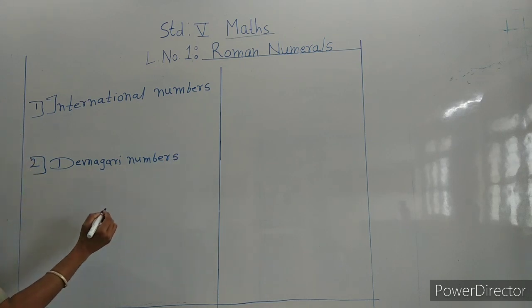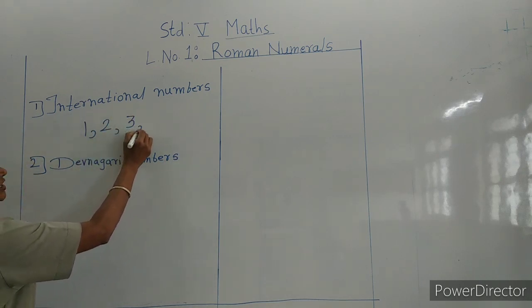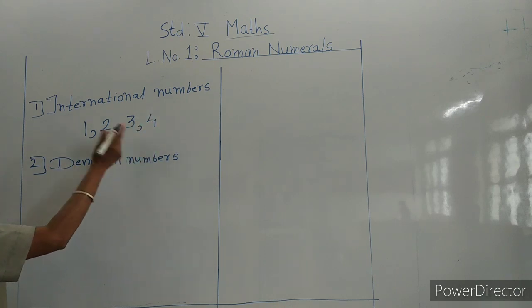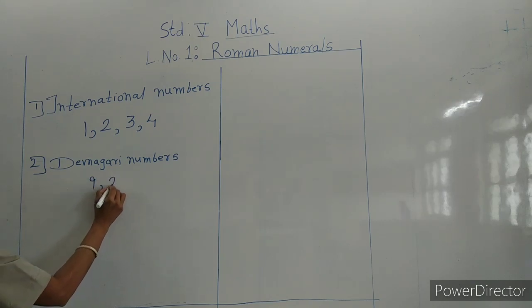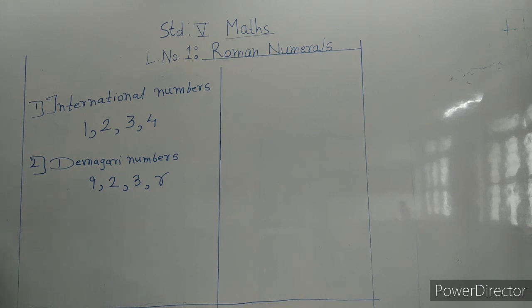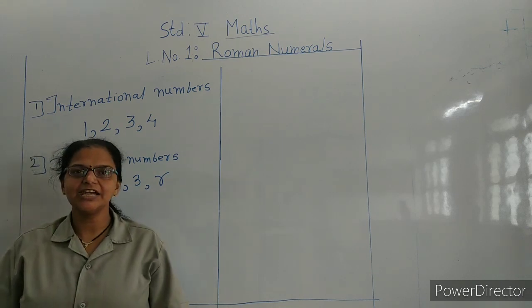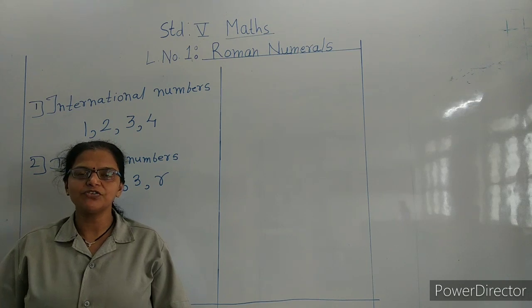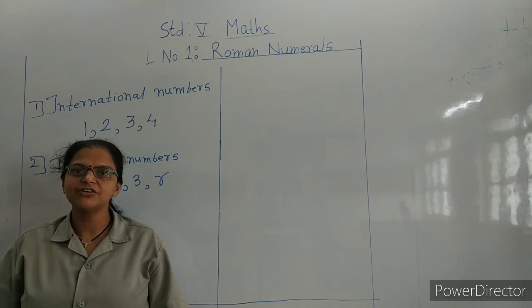The numbers 1, 2, 3, 4 are called international numbers. The numbers 8, 2, 3, 4 are called Devanagari numbers. In this standard, one more type of number has been added for you.